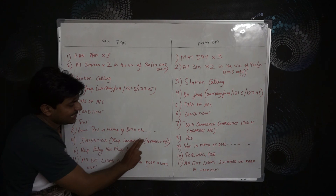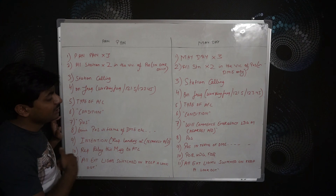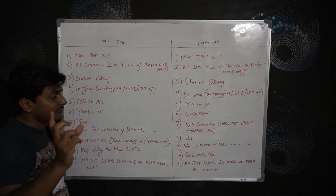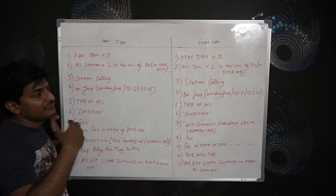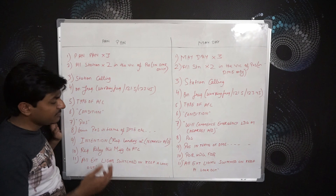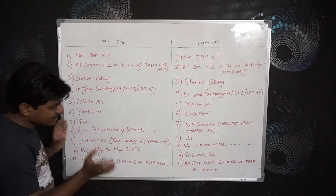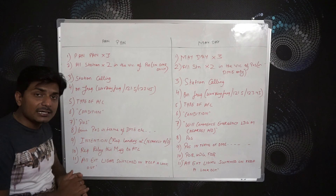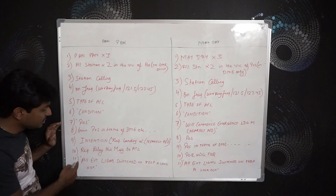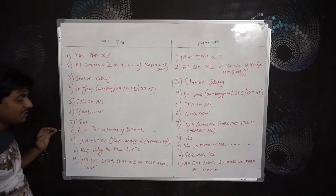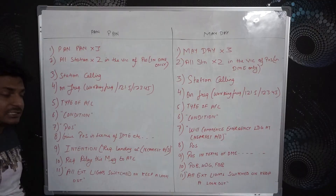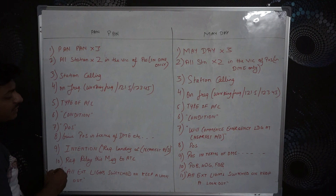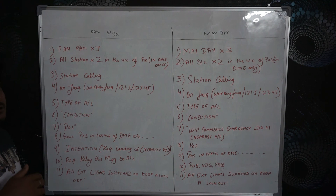Intention — in Pan Pan, the intention will be: request landing at nearest aerodrome — give the name. But the intention can change in different formats; for RVSM and weather deviation we have a different kind of intention, which I'll discuss in the next video. And you add: request relay this message to ATC. That means if any aircraft or ground station monitored your message, it can relay this to ATC so you get help.